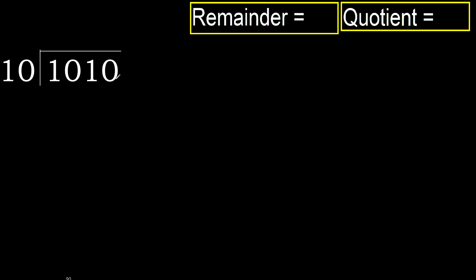1010 divided by 10. 1 is less, therefore next. 10 is not less, therefore work with 10. 10 multiply by which number is nearest to 10 but not greater.